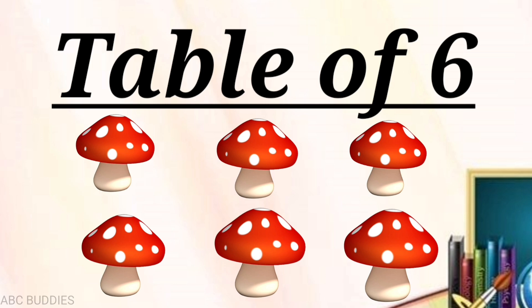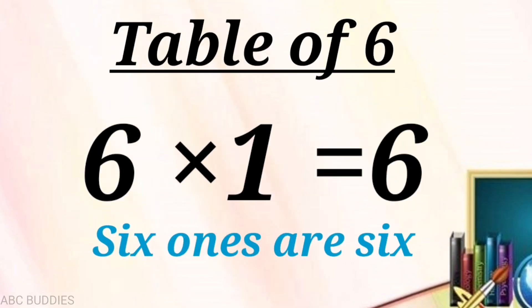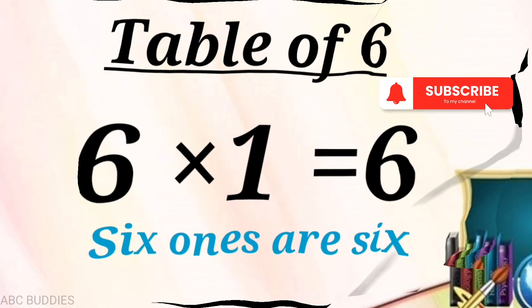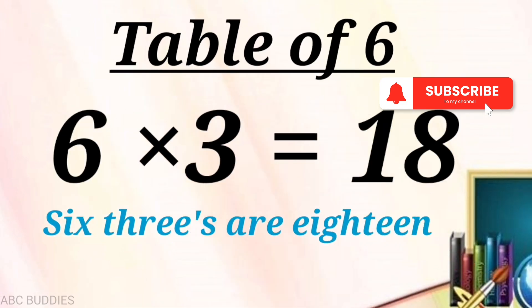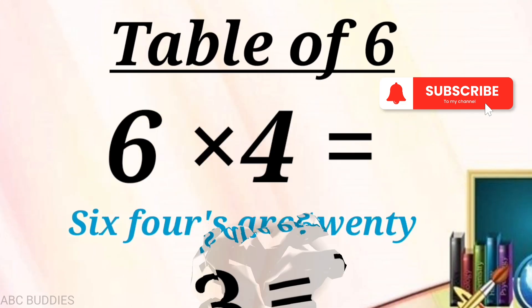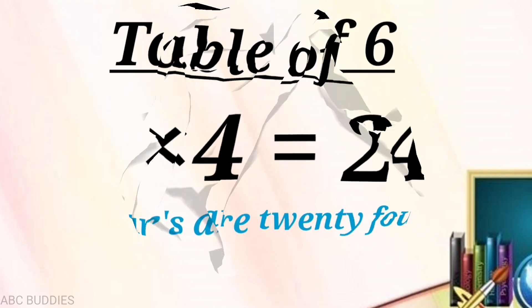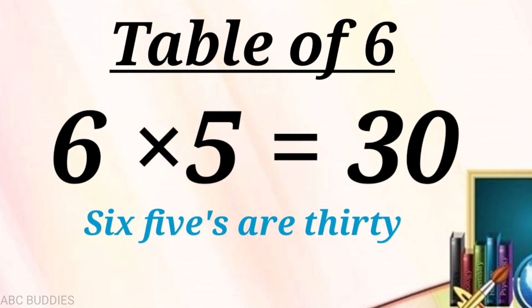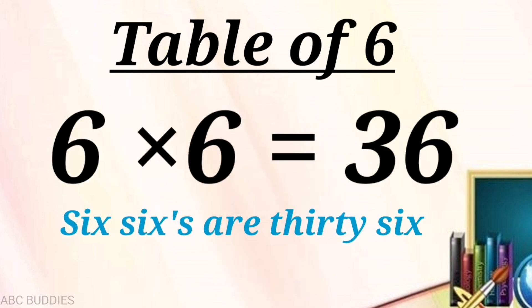Table of Six. Six ones are six. Six twos are twelve. Six threes are eighteen. Six fours are twenty-four. Six fives are thirty. Six sixes are thirty-six.